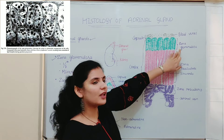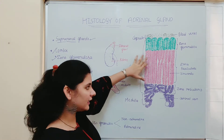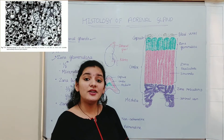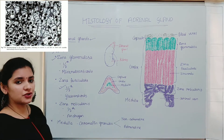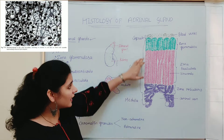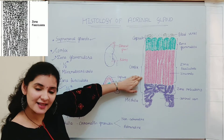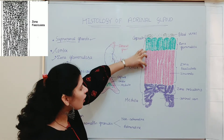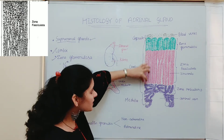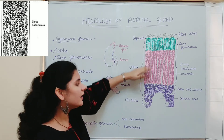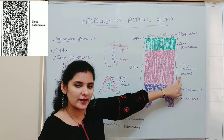Just below the zona glomerulosa is the second layer, zona fasciculata, which is the widest part of the cortex, making up about three-fifths of it. In zona fasciculata, the cells are cuboidal or polyhedral in shape and are arranged in columns of two to three cells thick. These columns are arranged in a radial manner towards the medulla, with sinusoids found in between the columns.